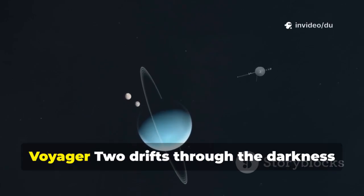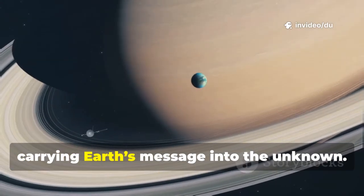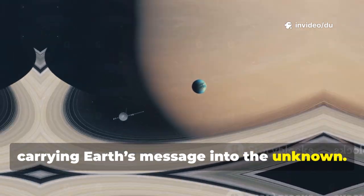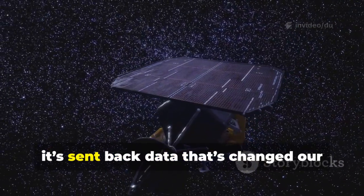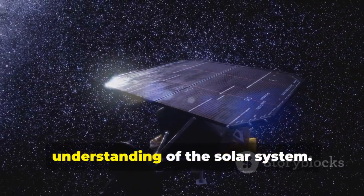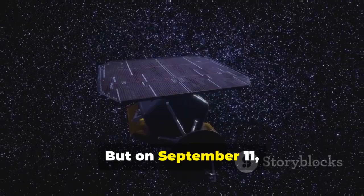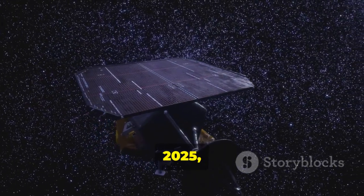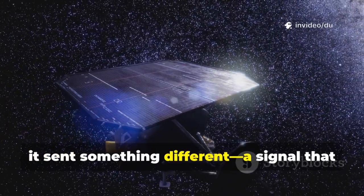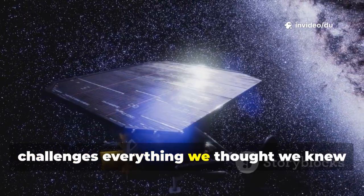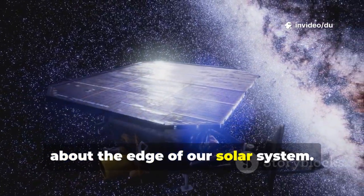Far beyond Pluto, Voyager 2 drifts through the darkness carrying Earth's message into the unknown. For nearly 50 years, it's sent back data that's changed our understanding of the solar system. But on September 11, 2025, it sent something different, a signal that challenges everything we thought we knew about the edge of our solar system.